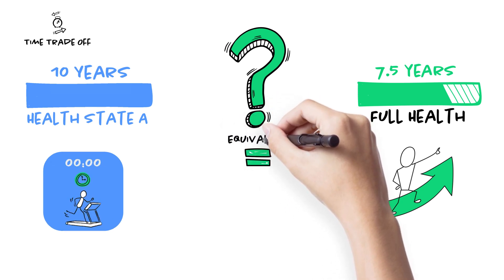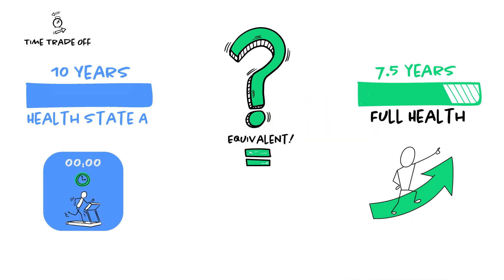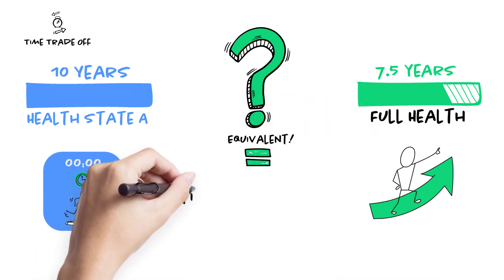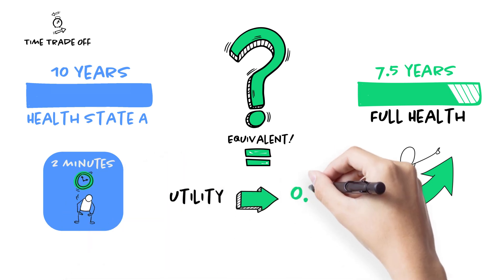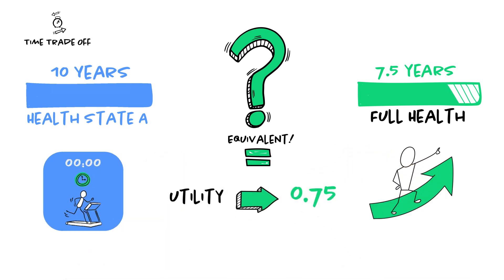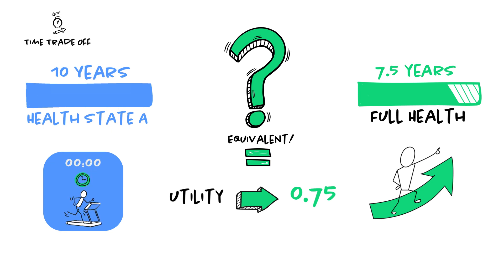If we assume that an individual is ready to consider 10 years in health state A equivalent to 7.5 years in perfect health, then, as perfect health state is equal to utility 1, health state A utility will be equal to 0.75.